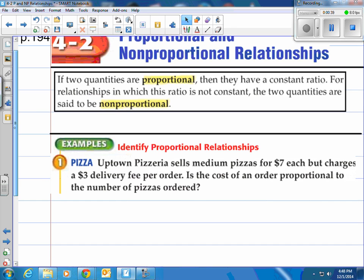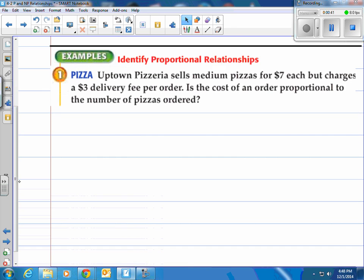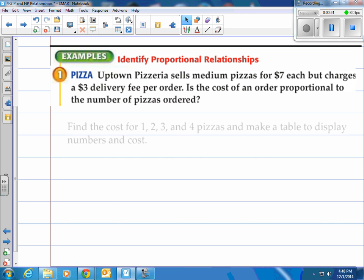Take a look at the pizza example here. It says Uptown Pizzeria sells medium pizzas for $7 each, but charges a $3 delivery fee per order. Is the cost of an order proportional to the number of pizzas ordered? Well first find the cost of one, two, three, four, however many pizzas, and make a table to display the numbers and costs.